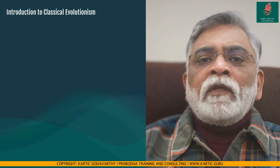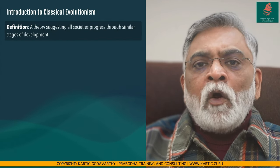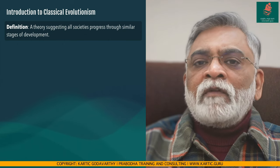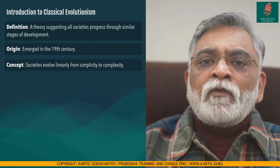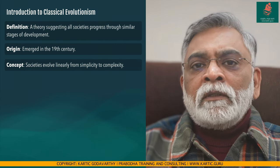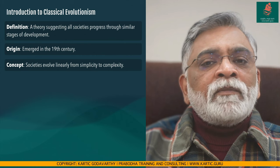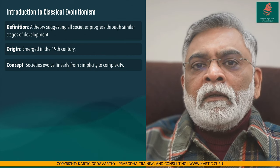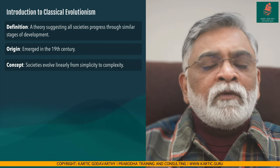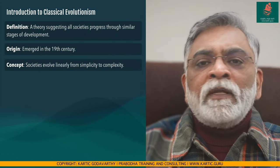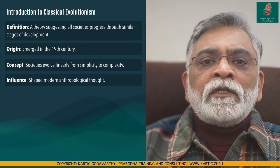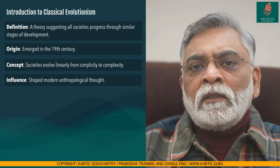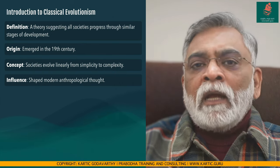What exactly is classical evolutionism? In a nutshell, it's a theory in anthropology that suggests all societies progress through similar stages of development. Born in the minds of 19th century scholars, it painted a picture of human societies marching in unison from simplicity to complexity and from savagery to civilization, viewing human societies as evolving from simpler forms to more complex ones in a linear trajectory. This concept profoundly influenced how anthropologists studied cultures worldwide, laying the groundwork for modern anthropological thought.